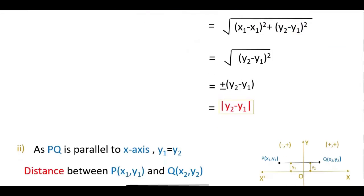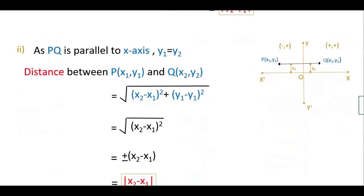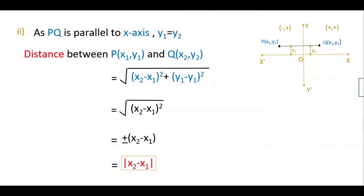In the second condition, PQ is parallel to x-axis. So if it is parallel to y-axis, then x₁ = x₂. If it is parallel to x-axis, then y₁ = y₂. You can see from this figure y₁ = y₂. So distance between these two points is: square root of (x₂ - x₁)², since y₁ and y₂ are equal. That is ±(x₂ - x₁), or you can write |x₂ - x₁|.